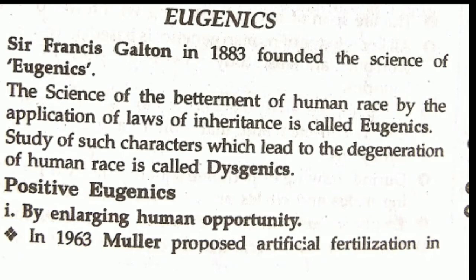First of all we will discuss eugenics. Sir Francis Galton in 1883 founded the science of eugenics. It is the science of betterment of human race by application of the laws of inheritance. The study of characters which lead to degeneration of human race is called dysgenics.